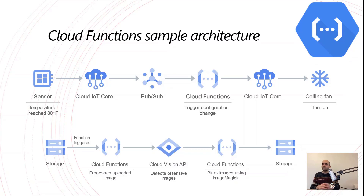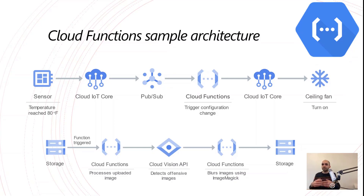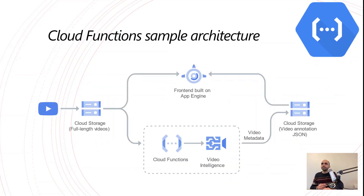Another Cloud Functions use case: a video is uploaded to cloud storage, triggering a Cloud Function that processes the content, then calls the Cloud Vision API from Google to detect if there is an offensive image. If one is found, it triggers another Cloud Function that blurs the image using ImageMagick, then stores it back to storage. No human needs to manually filter these images — they're found and blurred automatically.